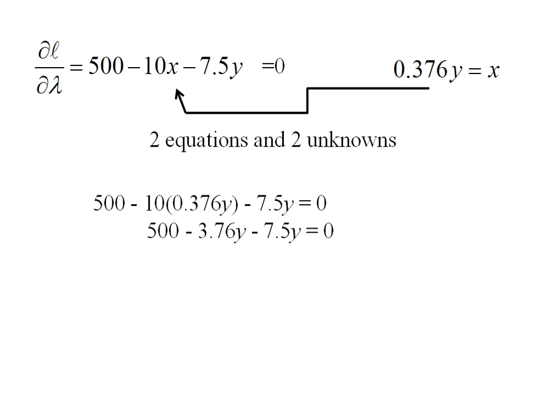500 minus 3.76y minus 7.5y equals 0. I'm going to combine the y's now, so 500 minus 11.26y equals 0. I'm going to add that 11.26y to the right-hand side, divide both sides by 11.26, and I'm left with y equals 44.4.